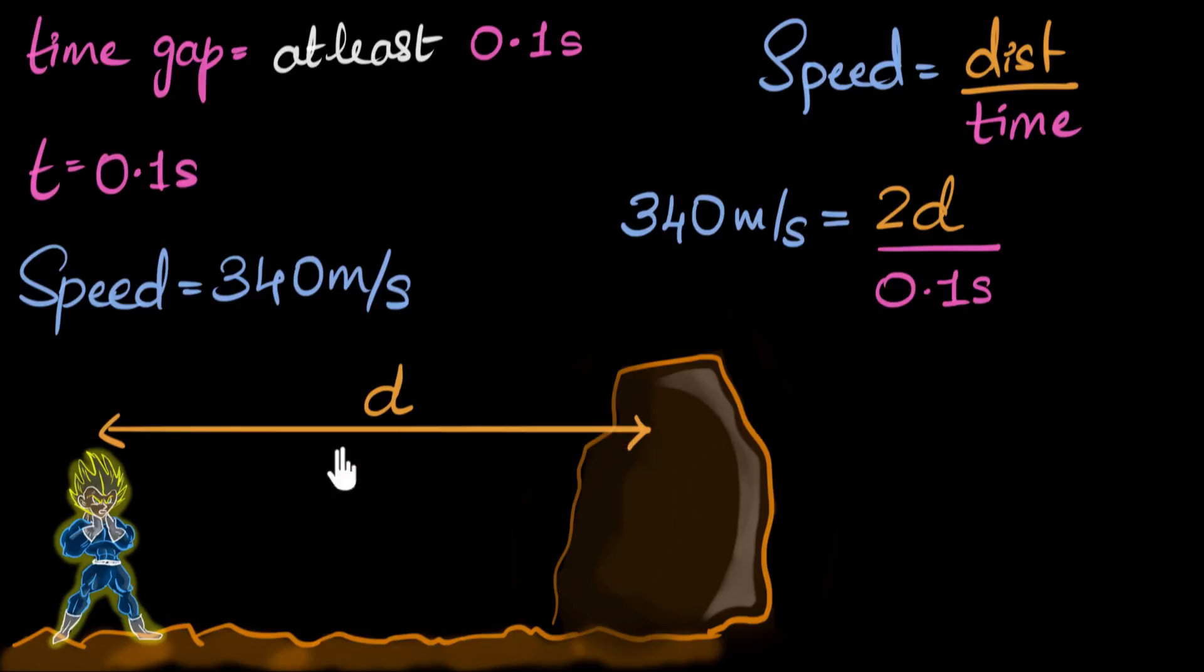All right, let's do it. So since I want to calculate what d is, let me first get rid of the denominator. To do that, I'll multiply by 0.1 second on both sides, 0.1 seconds here, 0.1 seconds over here. And so the 0.1 seconds divides out on the right. And over here, the second divides out.